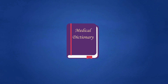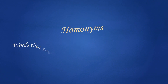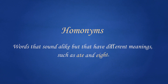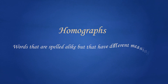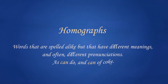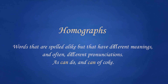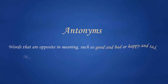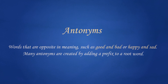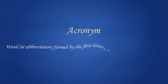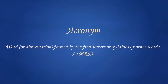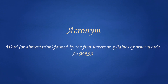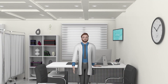Lastly, these are some terms that you should know. Homonyms are words that sound alike but have different meanings, such as eight and ate. Homographs are words that are spelled alike but have different meanings and often different pronunciations. Antonyms are words that are opposite in meaning, such as good and bad or happy and sad. Many antonyms are created by adding a prefix to a root word. An acronym is a word or abbreviation formed by the first letters or syllables of other words. That's it for this lesson, see you soon.